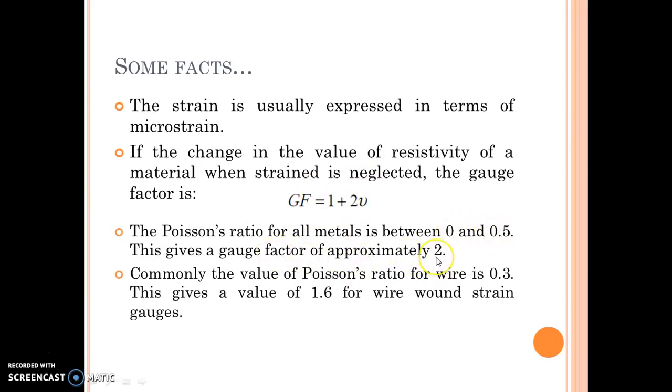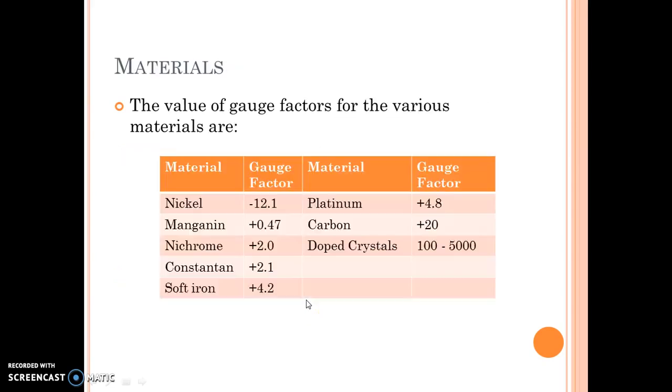The Poisson's ratio value of mu for all metals is between 0 and 0.5, which gives a gauge factor of approximately 2. If not given in the problem, you can assume the Poisson's ratio as 0.3, which gives a gauge factor of 1.6 for wire wound strain gauges. These are some materials which are used for constructing strain gauges. Have a look at them.